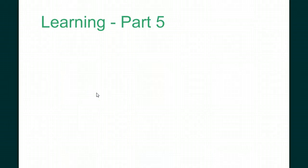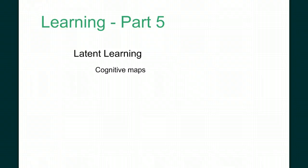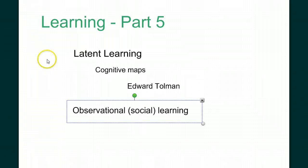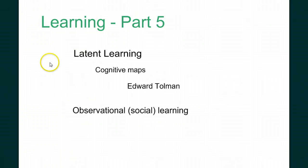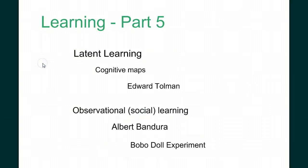This is the fifth and final video in our five-part series on learning. In this video, we're going to look at latent learning and cognitive maps, based on the work of Edward Tolman. Then we're going to discuss observational, or social, learning, and the work of Albert Bandura and his famous Bobo Doll experiment. We will look at the implications of both of these concepts as they relate to our understanding of learning.